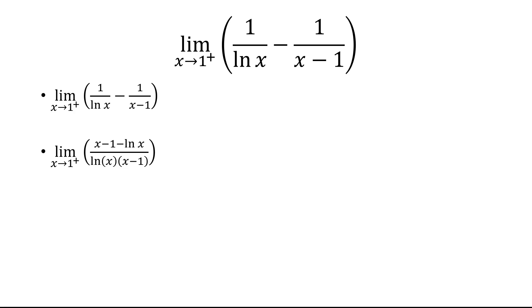I plug in x equals 1 and I end up getting 0 over 0. So I have to use L'Hopital's rule. The derivative of the top is 1 minus 1 over x. The derivative of the bottom is 1 over x times quantity x minus 1 plus ln of x.